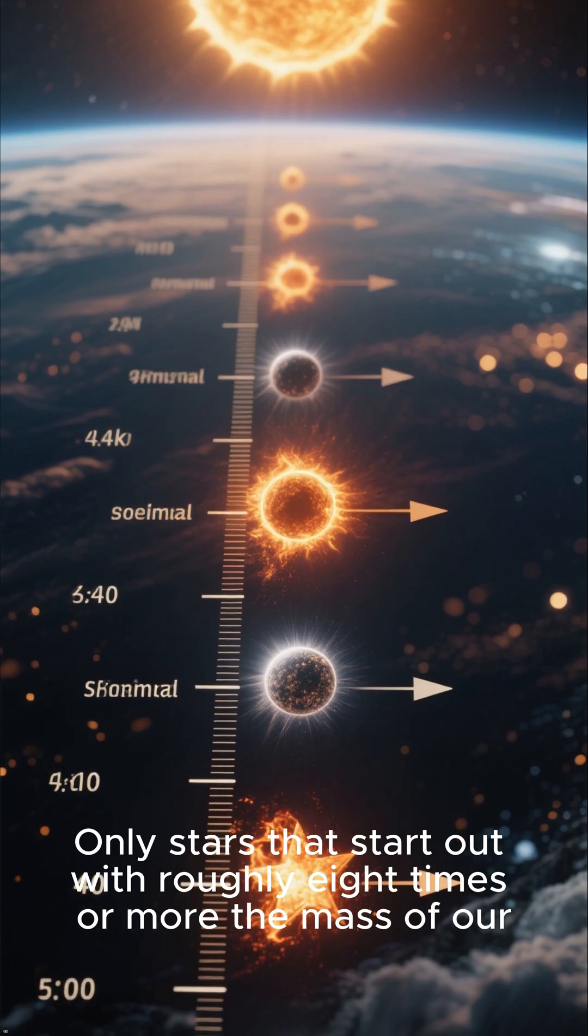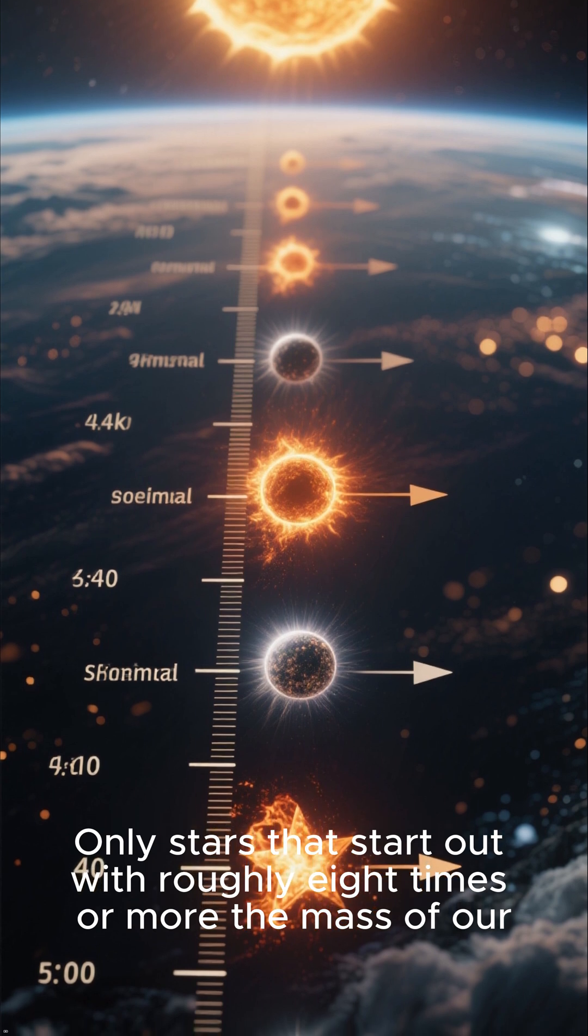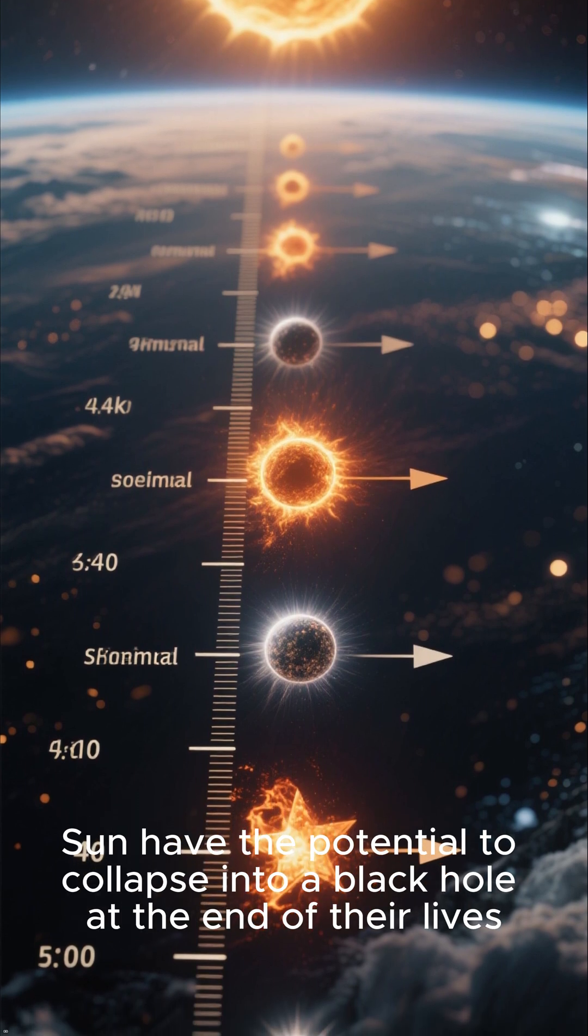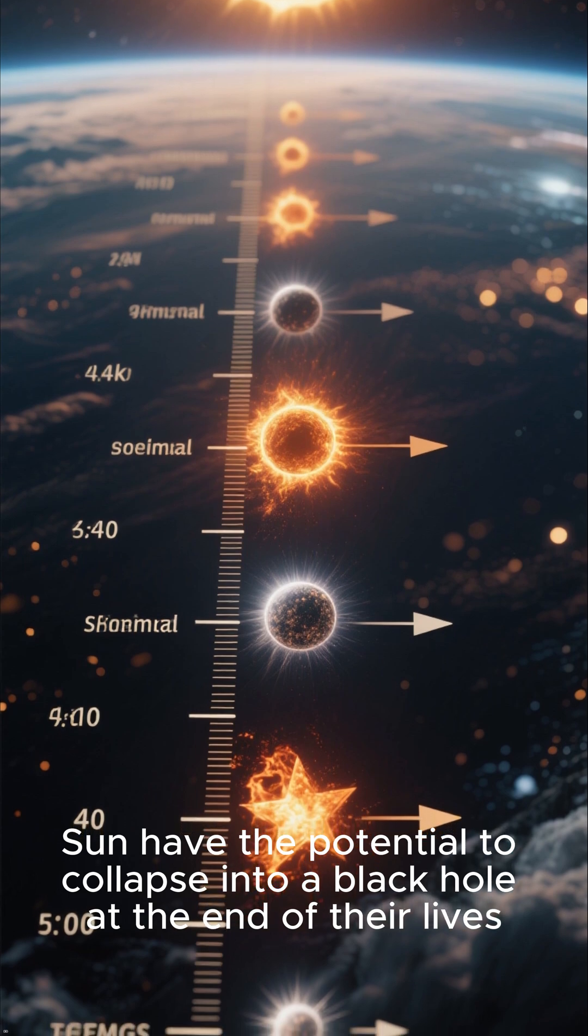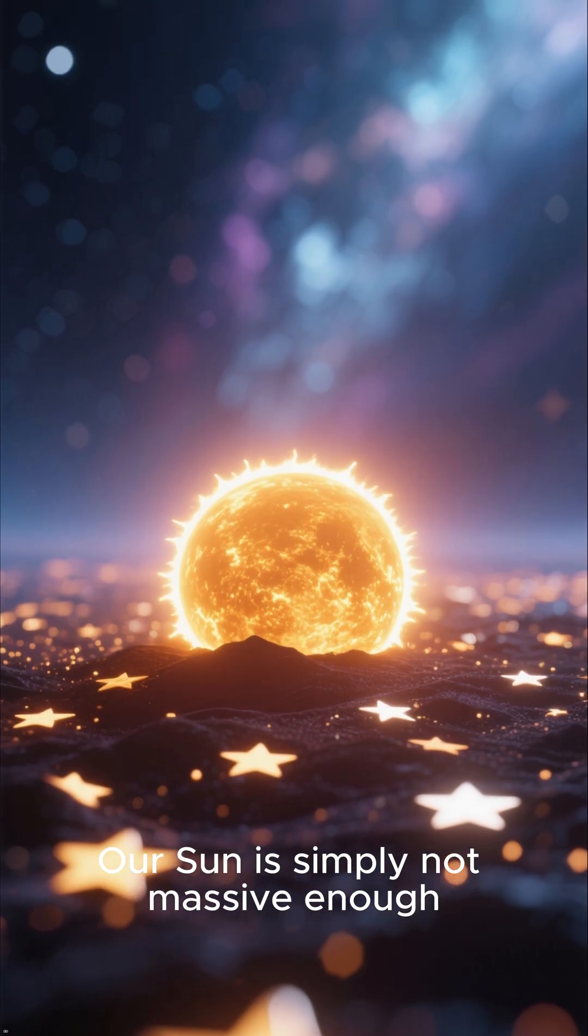Only stars that start out with roughly eight times or more the mass of our sun have the potential to collapse into a black hole at the end of their lives. Our sun is simply not massive enough.